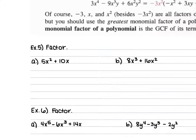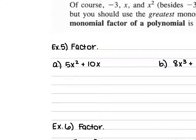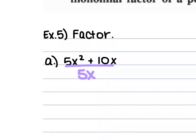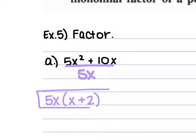Our next set of examples deals with factoring. We're not being told what to divide out; instead, we take the greatest common factor and divide all terms by it, bringing it out front of parentheses. Whatever is left over stays inside the parentheses. For Example 5a, we have 5x² plus 10x. The greatest common factor is 5x. Dividing each term: 5x² divided by 5x is x, and 10x divided by 5x is 2. So we have 5x times (x plus 2).